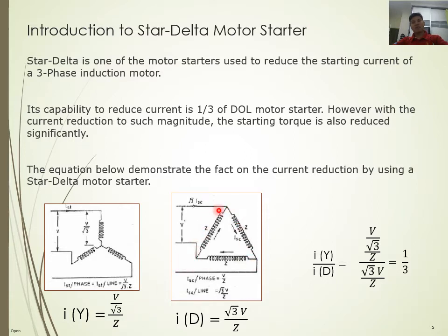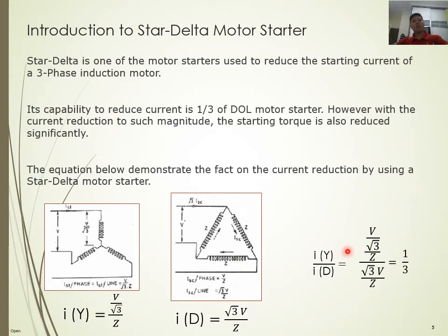For a three-phase delta circuit, the line-to-line voltage and the phase voltage are equal. But the line current is greater than the phase current by root 3. By knowing the equations for star and delta current elements and doing the mathematical derivation, we get a value of one-third. This tells us that starting the motor in star and running it in delta gives one-third of the current compared to starting directly in delta.